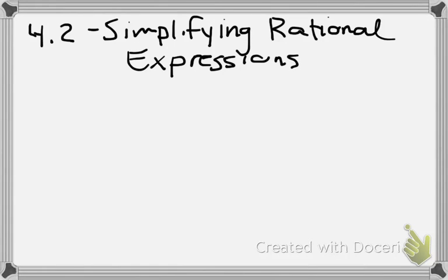Today is 4.2, simplifying rational expressions. When we're simplifying rational expressions, there's kind of three main steps. Our first step is we always want to factor numerator and denominator, so top and bottom.